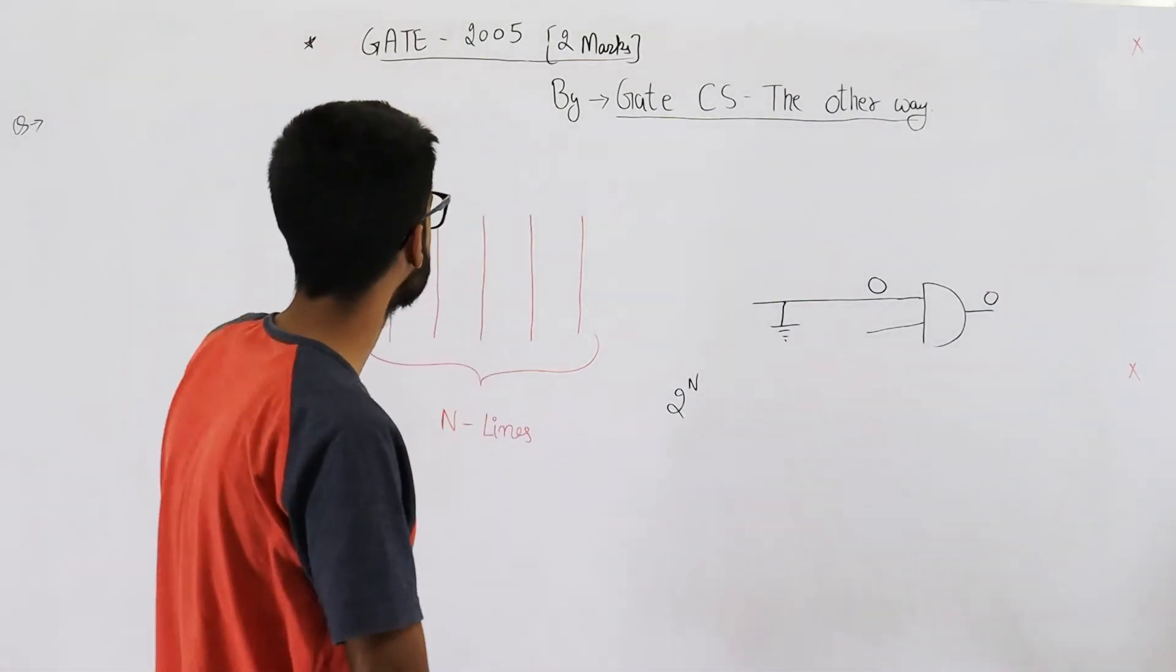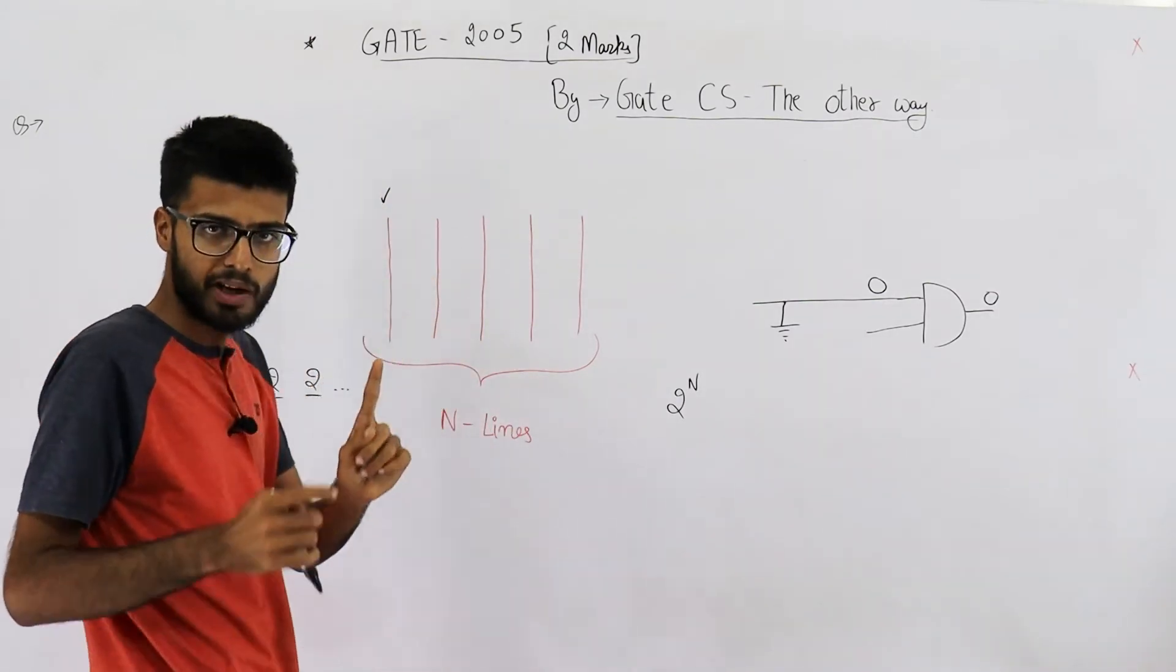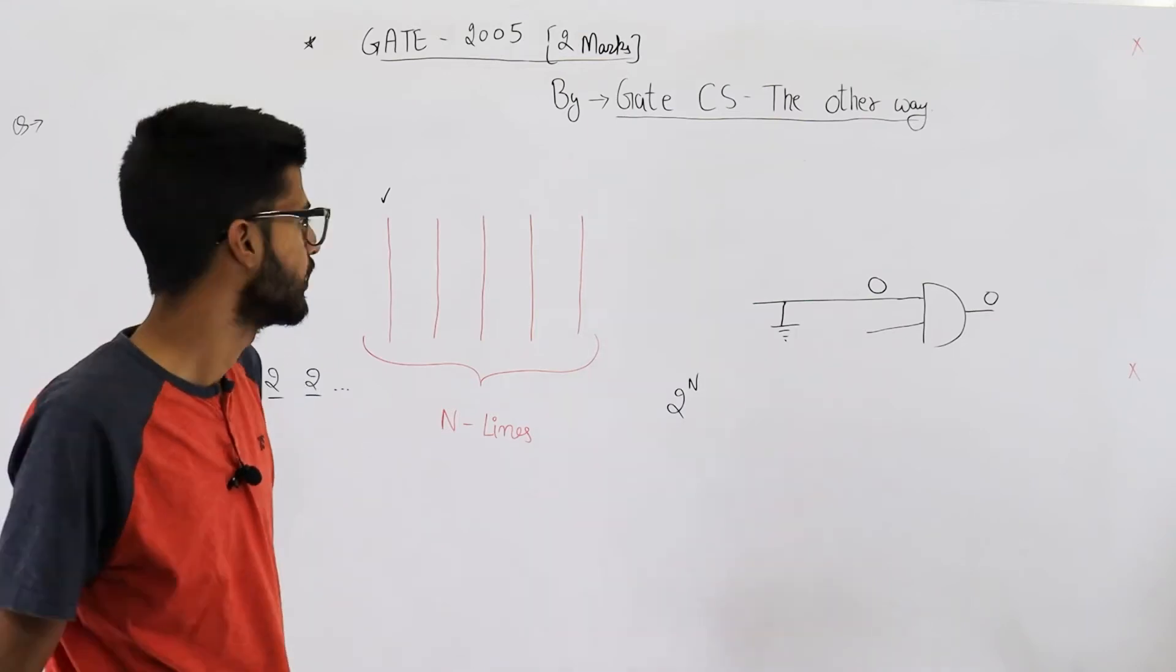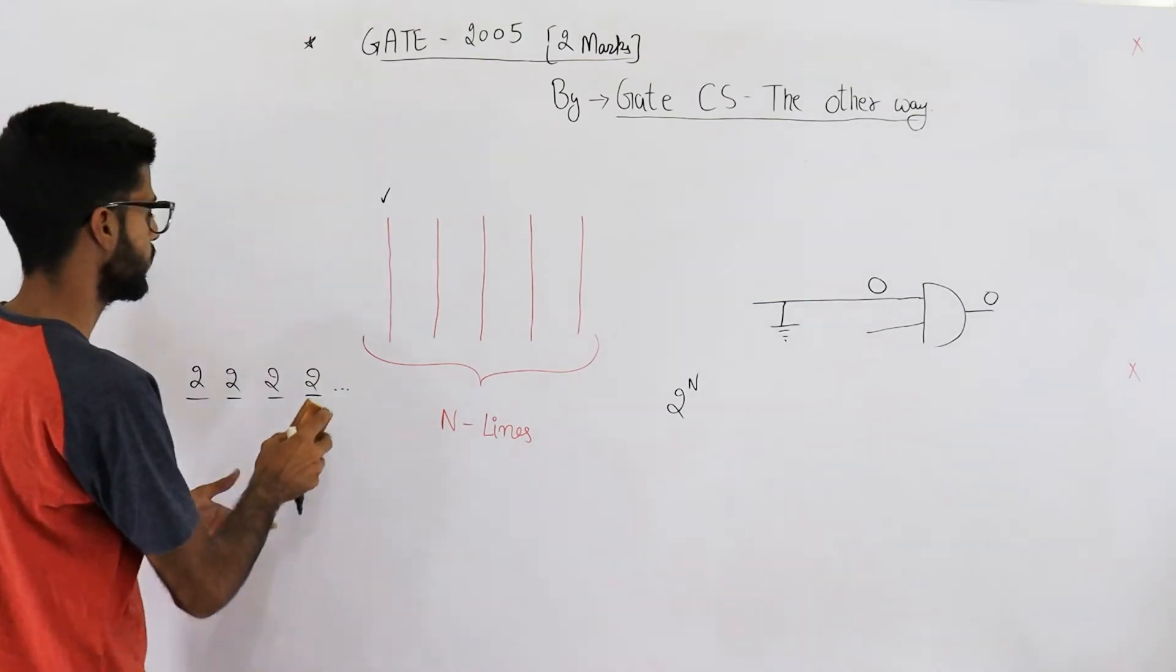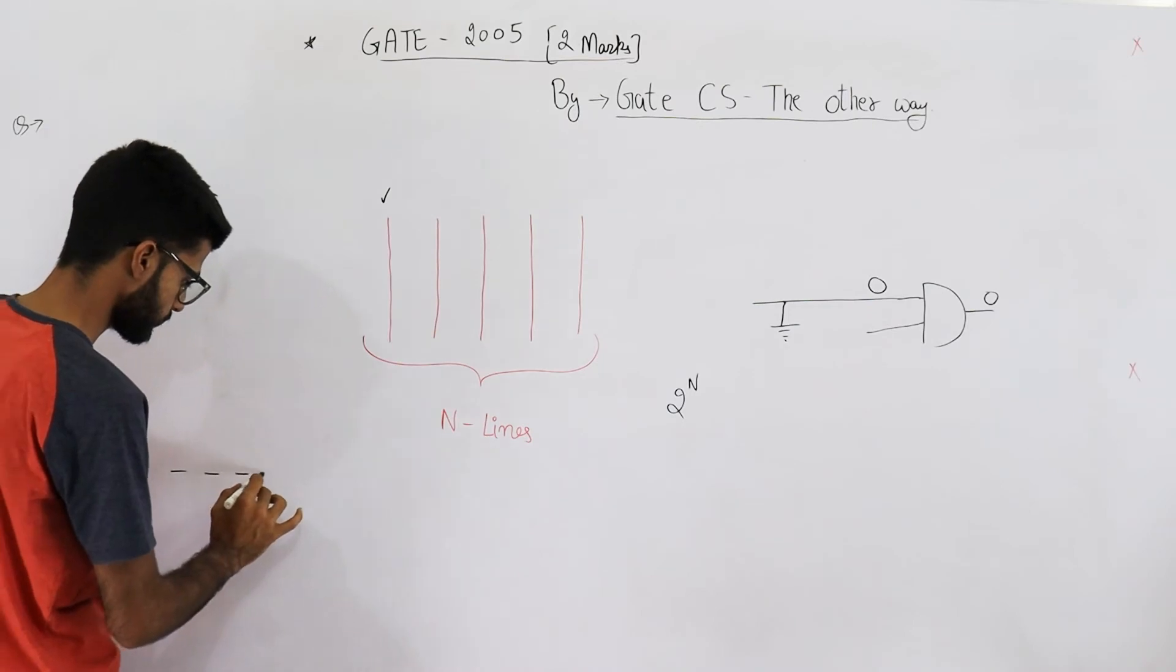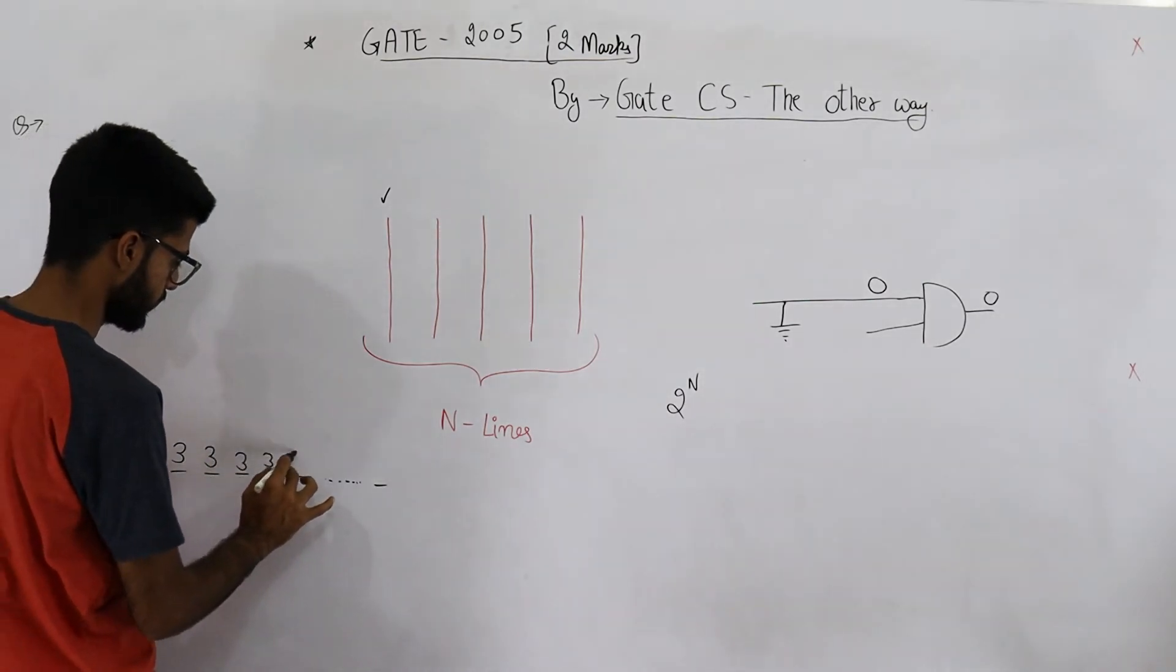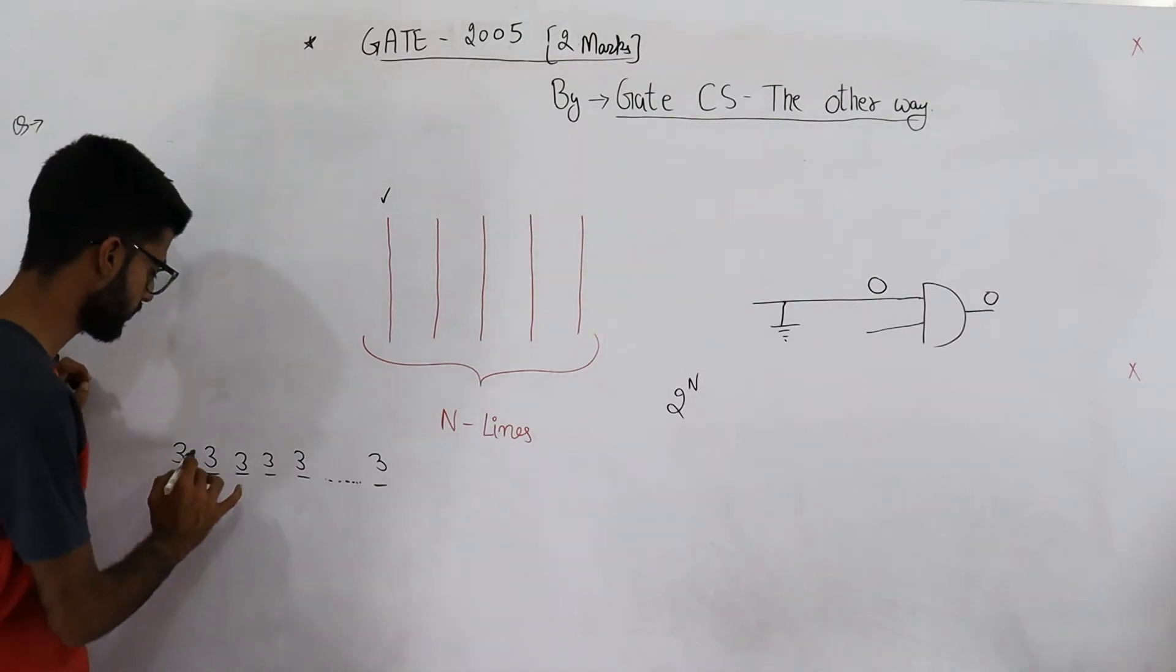because you're not counting the third possibility, which is any line might be stuck-at-zero (one possibility), stuck-at-one (two possibilities), or it might not have any fault. That means actually every line has three possibilities. So this way your answer must be 3 raised to the power N. Because say these are the N lines, and each line has three possibilities. Now total is 3^N - you multiply all these